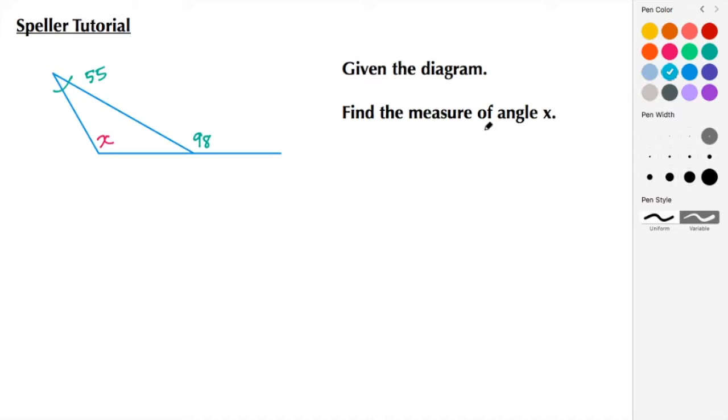Here we have a given diagram, and we need to find the measure of angle X. Notice we have a triangle here, and we also have a linear pair here and here.